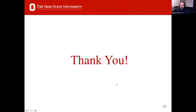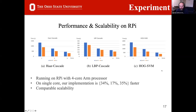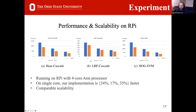The moderator asks about slide 17: why does the LBP cascade show a slightly smaller performance improvement compared to the other applications?